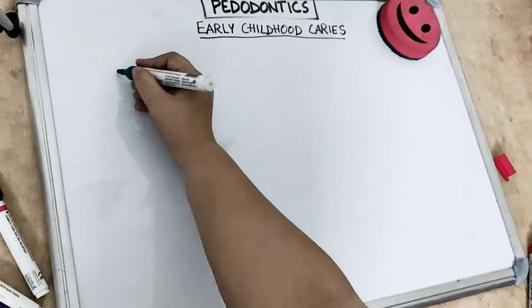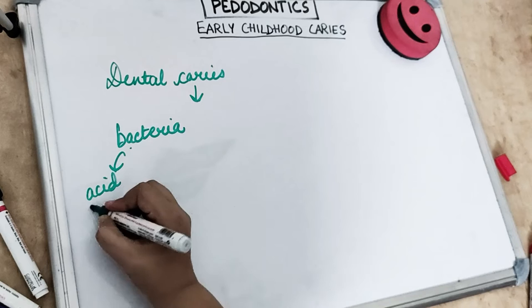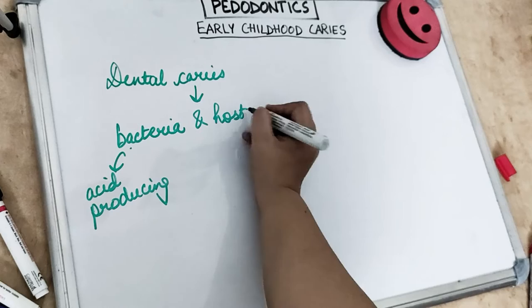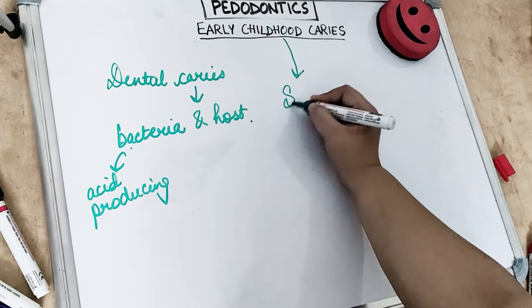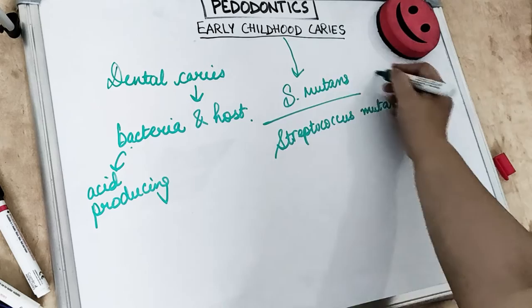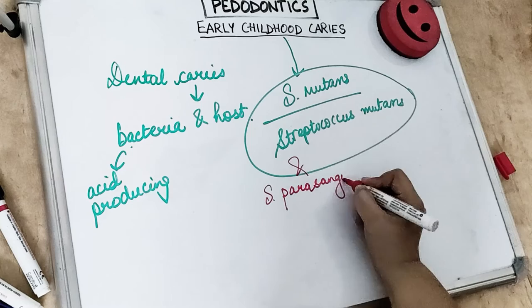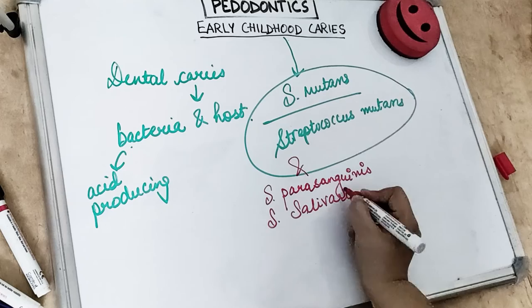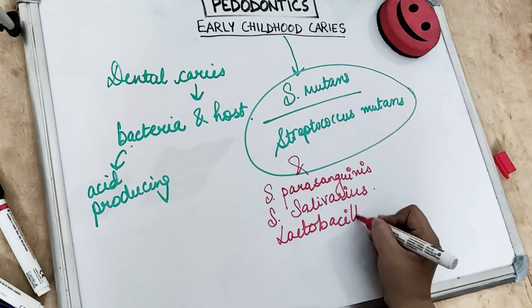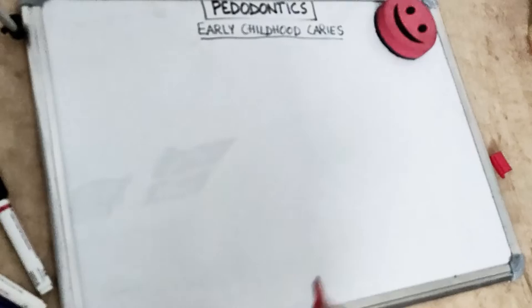Dental caries are caused by an interaction between acidogenic bacteria, a carbohydrate substrate — frequently sucrose — and host susceptibility. The primary pathogen for early childhood caries is Streptococcus mutans. Along with S. mutans, ECC also shows significant association with S. parasanguinus, S. salivarius, Lactobacillus casei, and Actinomyces viscosus.